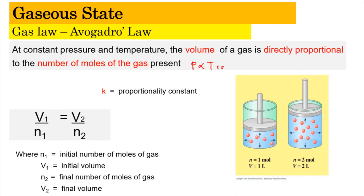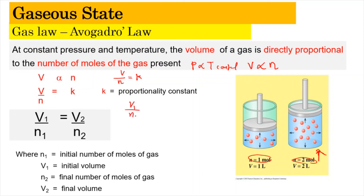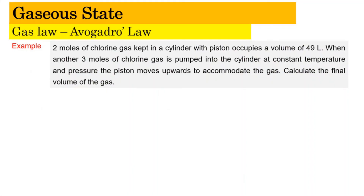According to Avogadro's Law, at constant pressure and temperature, the volume is directly proportional to the number of moles of gas present. When the number of moles increases, the volume occupied by the gas also increases. This gives V/n = k, or the working equation V₁/n₁ = V₂/n₂, where n refers to the number of moles and V to the volume.